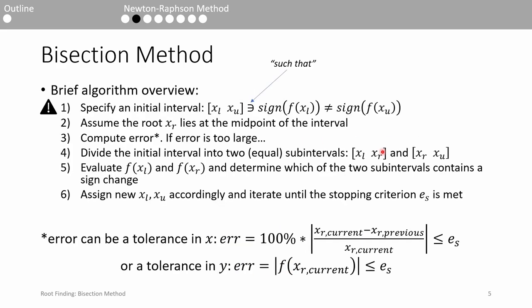The bisection method is known as an incremental search because you must specify an increment, or an interval, over which to search for the root. The interval must contain two points which have different signs when evaluated by the function. This backwards-looking e symbol means such that,